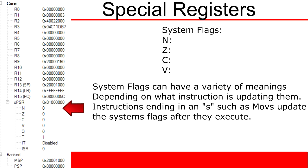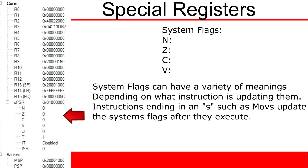There are also other values stored in the PSR register. These are called system flags. System flags are very important, as they give you feedback on what you have done inside your registers. It is very important that you keep track of when system flags are updated. By adding an S to the end of most instructions, you can tell that instruction to update the system flags once it is done executing.